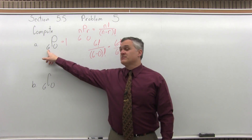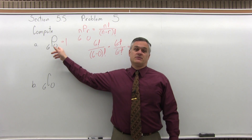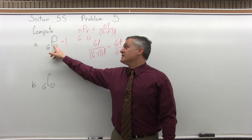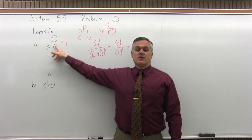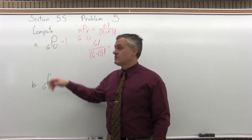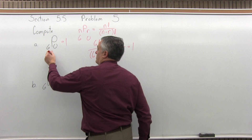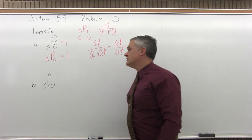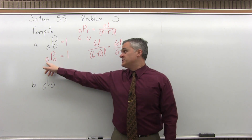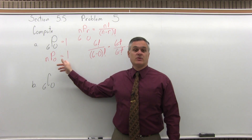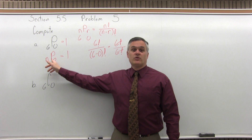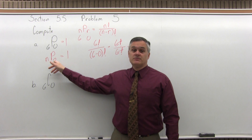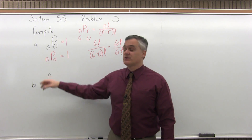If you have 6 items to choose from, the number of ways you can choose 0 of them is only 1 — you just leave them all behind. In general, whenever the second number is 0, the answer is 1, whatever the first one is. So n permutation 0 equals 1 for all values of n. For example, 68 permutation 0 equals 1, and 247 permutation 0 is 1. When the second number is 0, the answer is always 1 no matter what the first number is.